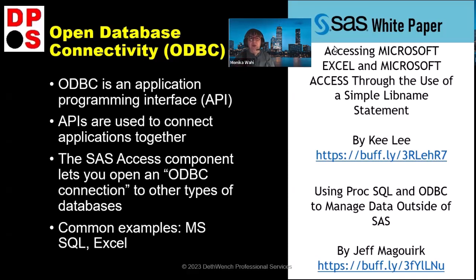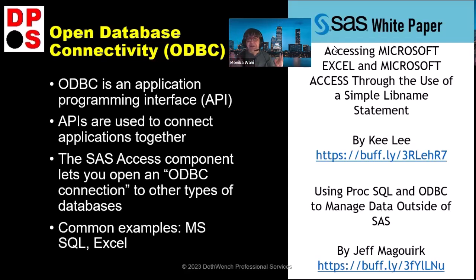ODBC stands for Open Database Connectivity — think of it as a plug you can plug other things into. ODBC is an API, which stands for Application Programming Interface. APIs are used to connect applications together, so ODBC is basically an API for connecting database applications together. Now you can feel smart that you've learned some new terminology today!